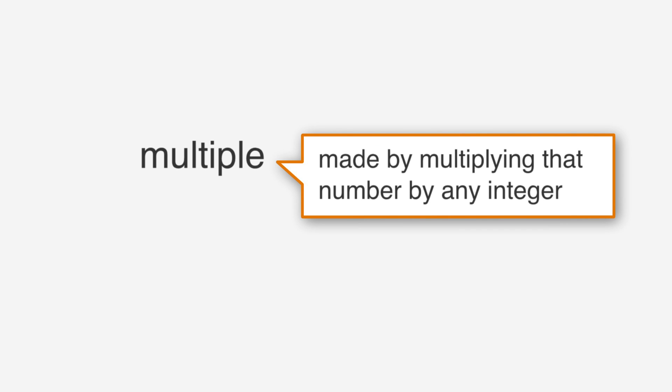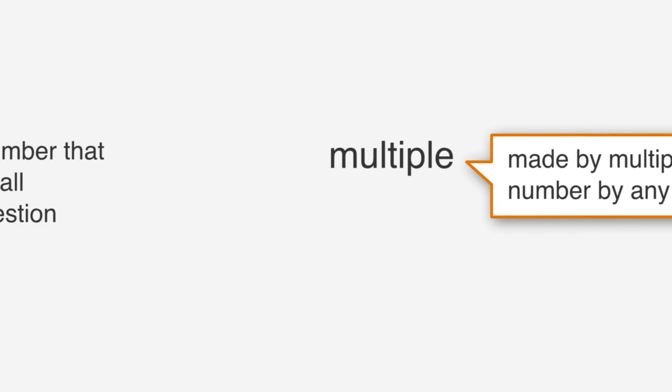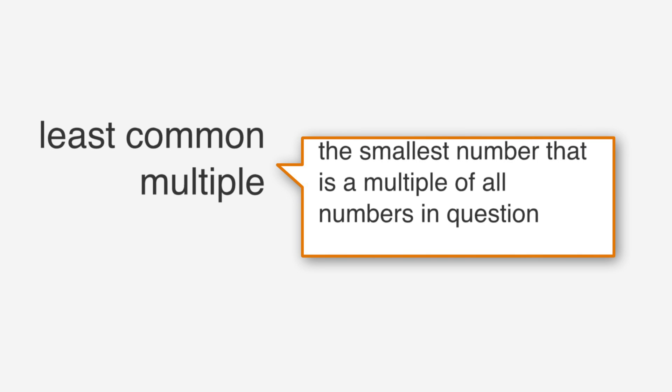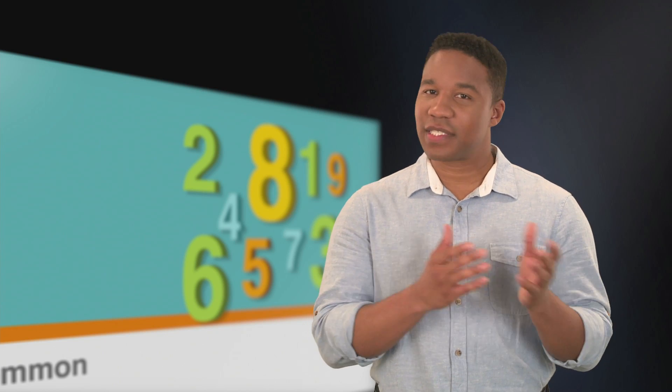Let's start with plain and simple multiples. A multiple of a number is made by multiplying that number by any integer, and the least common multiple is the smallest number that is a multiple of all numbers in question. Technically zero is the smallest multiple of any number, but when working with least common multiples, keep in mind that zero is not useful, because any number times zero is zero.